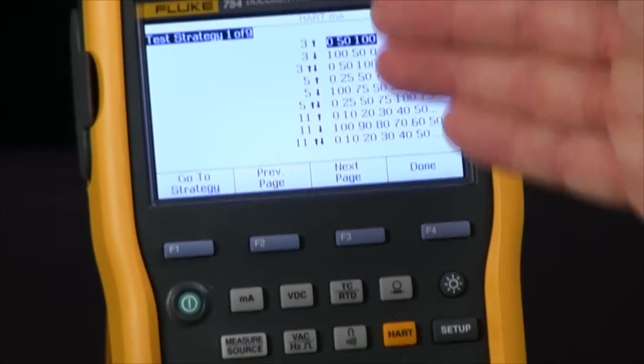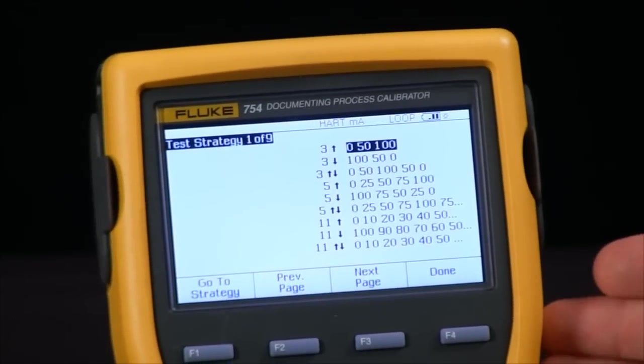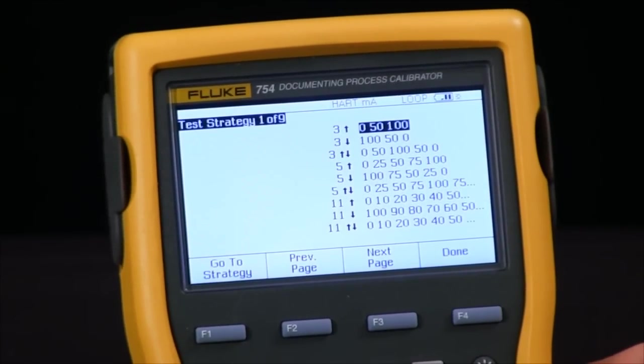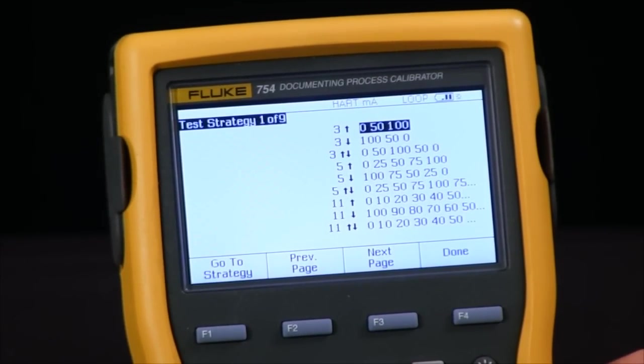I have a selection from a 3 up 3 down all the way up to an 11 up and down, or I can select any specific test called by the manufacturer or by my specific process.